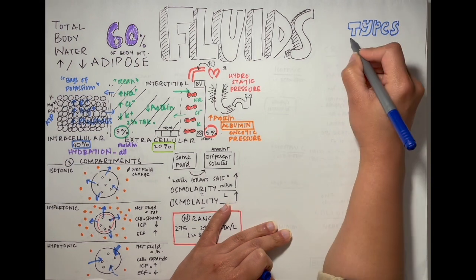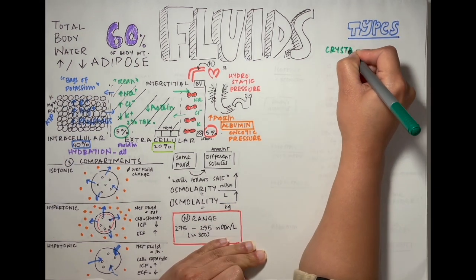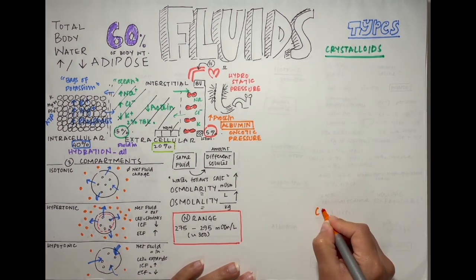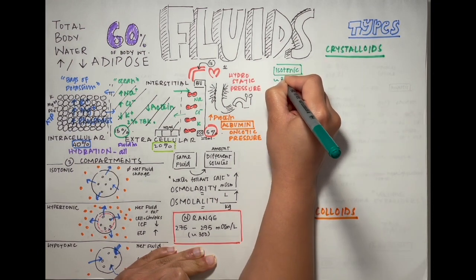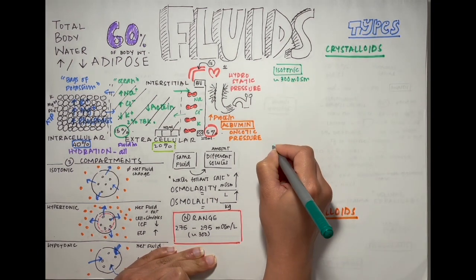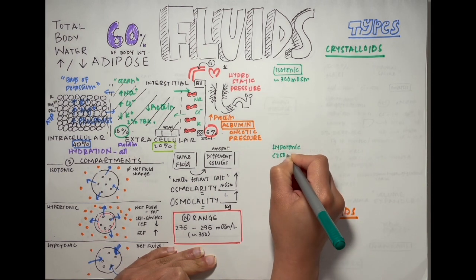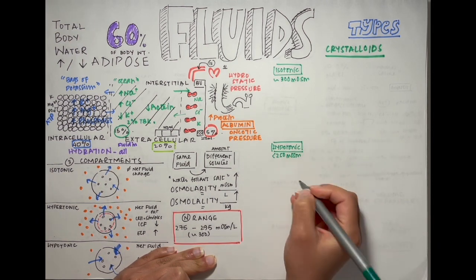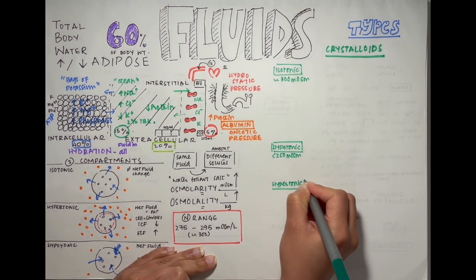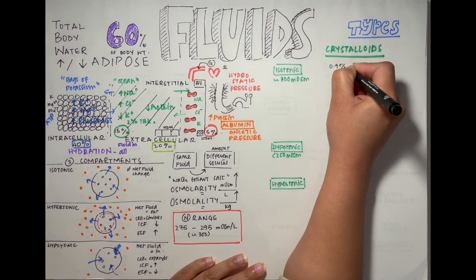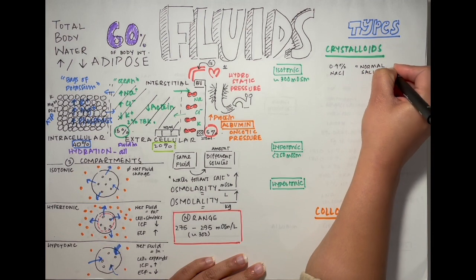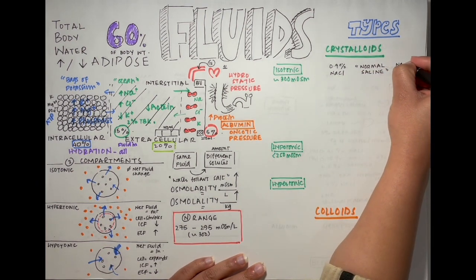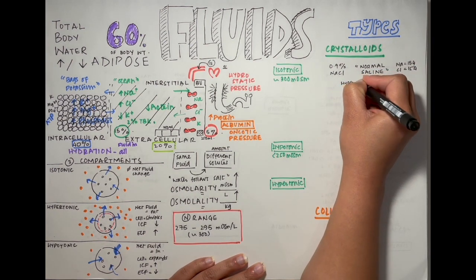Now that we've understood the various compartments and how fluid shifts in and out of cells, let's talk about the various types of fluids available to us. There's two big categories: one is crystalloids and the other colloids. The difference between them is the size of the molecules present in each. Crystalloids can come in isotonic, hypotonic, and hypertonic forms. The most common isotonic solutions are 0.9% NaCl which is called normal saline and it contains 154 millimoles per liter of sodium and of chloride.